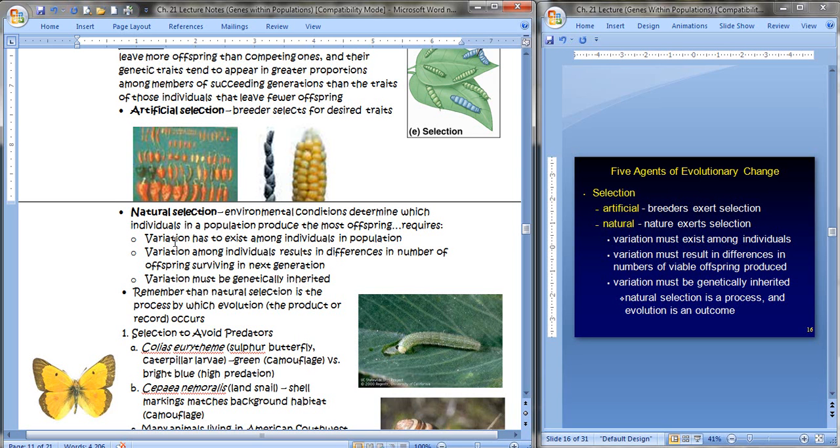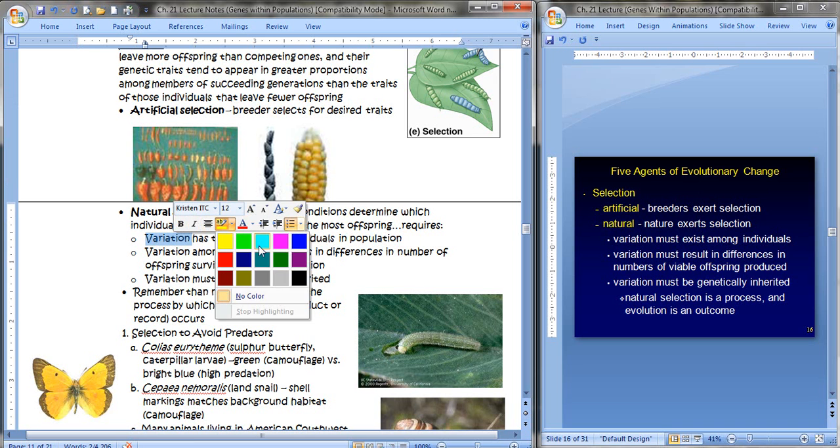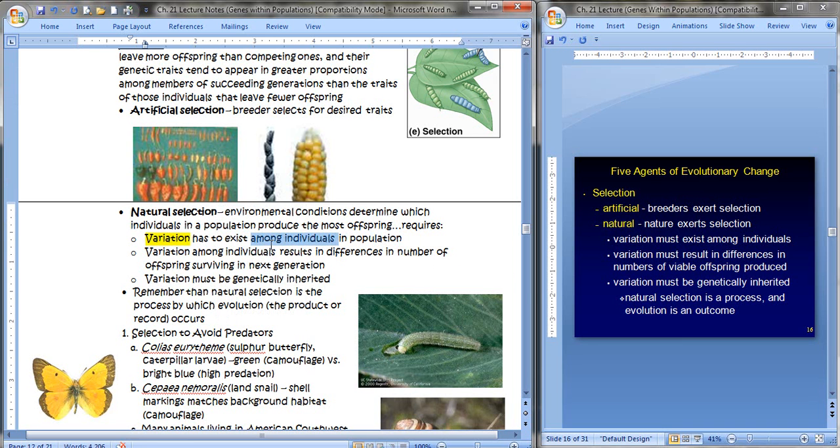So let's take a look first at artificial selection. Artificial selection is represented by this picture here, where breeders will select for desired traits and cause changes. For example, corn from historic maize plant. Natural selection is an environmental condition that determines which individuals in a population produce the most offspring. It's going to require these things. It's going to require that there is, first of all, variation among the individuals. And that the variation has to result in differences in the number of offspring in the next generation that survive. And the variation must be genetically inherited. So first, there's got to be variation in the individuals, which has to result in differences in the number of offspring that they make. And that variation has to be genetically based.